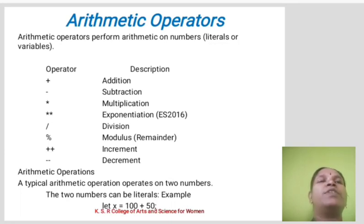increment, and decrement. The typical arithmetic operators work on two numbers. Two numbers can be literals. Example: let x equals 100 plus 50.